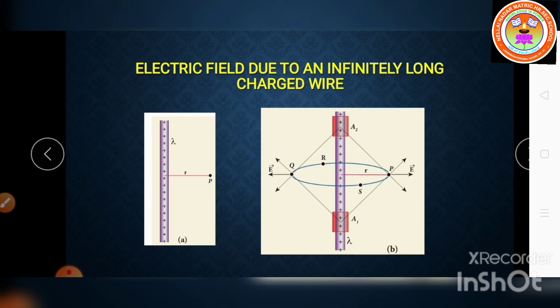We are taking the charge as positive. The resultant electric field at point P due to area A1 is outward, and due to area A2 is also outward. So the resultant electric field due to these two charge elements points radially away from the charged wire.